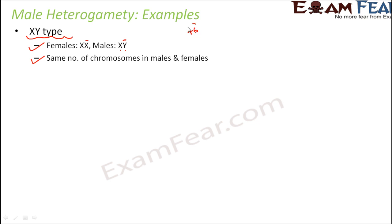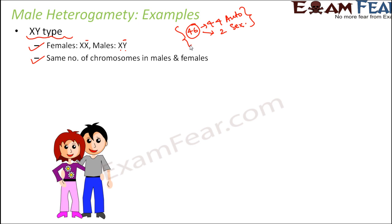For example, in human beings, there are 46 chromosomes, of which 44 are autosomes and the last two are sex chromosomes. This number is the same in both males and females. Females have both sex chromosomes as X, while males have one X and one Y. In human beings, the female has both X chromosomes which are identical, and males have one X chromosome and one Y chromosome which is smaller.